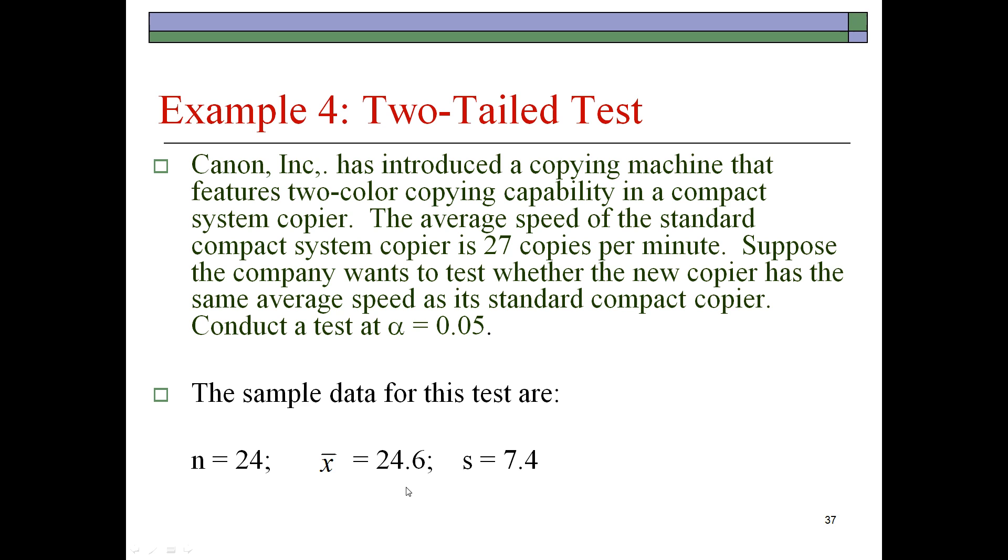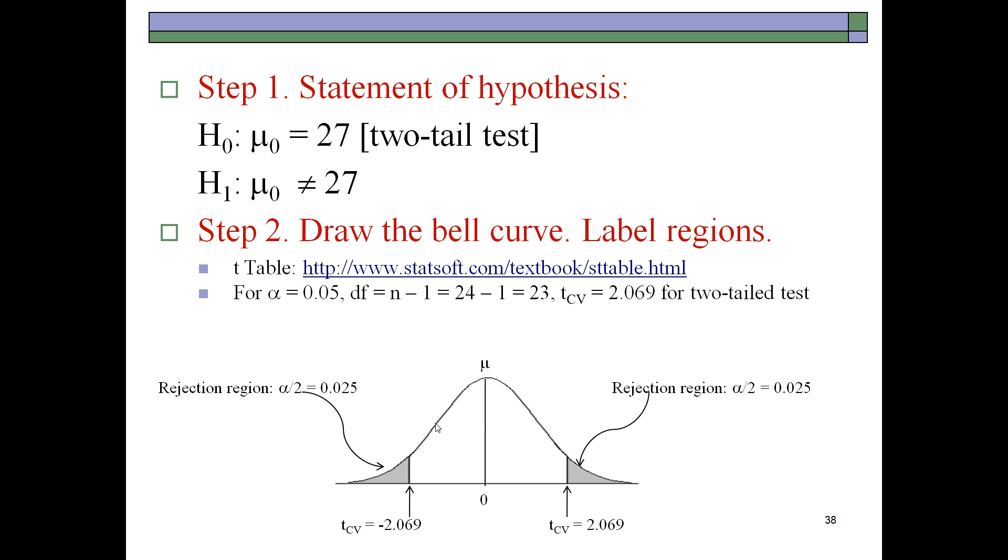Those observations provide us with a sample mean of 24.6 copies per minute with a standard deviation of 7.4. We do know that 24.6 is less than 27 copies, which is the standard number of copies for this company right now. But the question is, is 24.6 so statistically significantly smaller than 27 that we are willing to conclude that the new copier's speed is less? For this, we'll first formulate our statement of hypothesis.